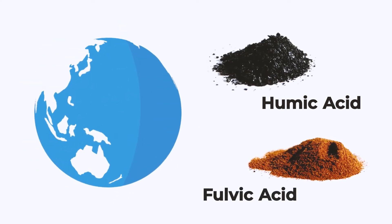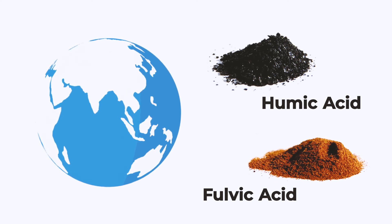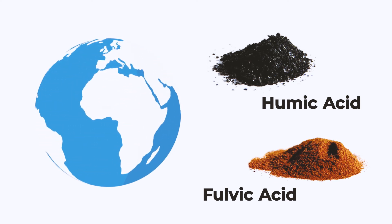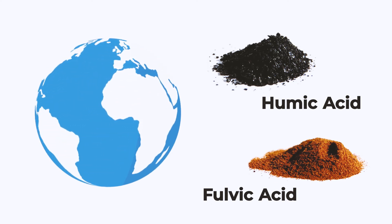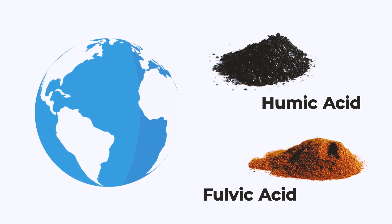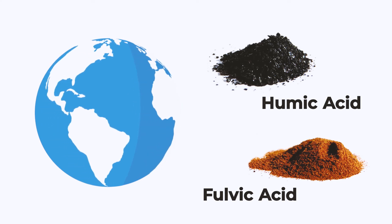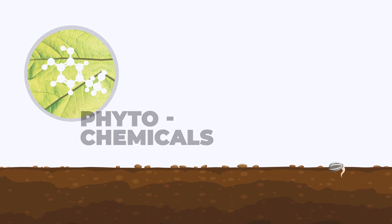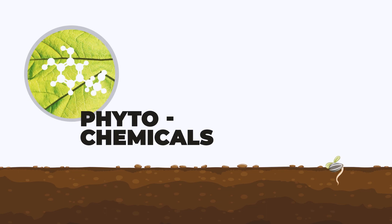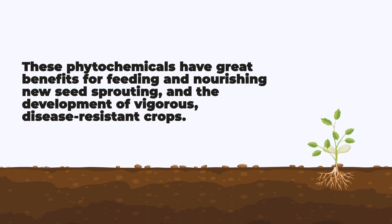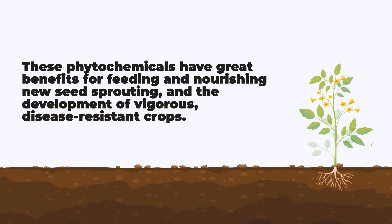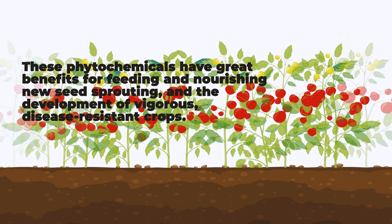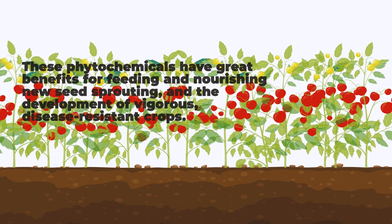There are several sources of humates in the world. All have different characteristics, depending upon where they originate and how old they are. Humates carry ancient plant molecules known as phytochemicals. These phytochemicals have great benefits for feeding and nourishing new seed sprouting and the development of vigorous, disease-resistant crops.